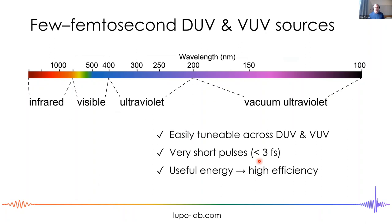For these applications, we want tunable sources across the whole range — not restricted to individual wavelengths, but continuously tunable depending on whatever system we're studying. We want really short pulses to probe the fastest dynamics; some dynamics in small molecules are sub-10 femtoseconds. We also want good energy to measure these things, and high efficiency so we don't need continuously large laser systems.